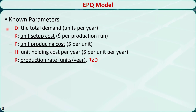D is the total demand, measured in units of products per year. K is the unit setup cost, measured in dollars per production run. P is the unit producing cost, measured in dollars per unit of products. H is the unit holding cost, measured in dollars per unit of products per year. R is the production rate, measured in units per year. Normally, the production rate R should be greater than or equal to the demand rate D; otherwise, there will be shortages.